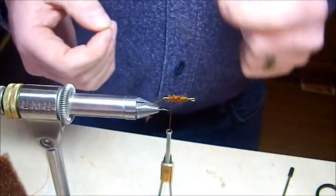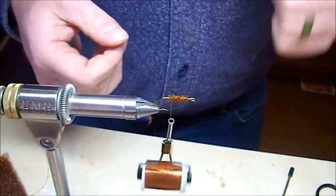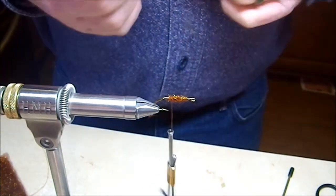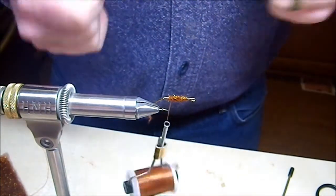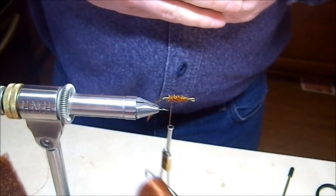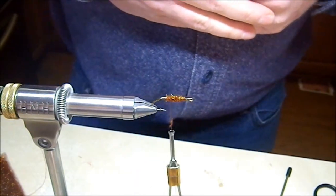But use as little dubbing as you can get by with each time, and you'll find out that you've got great control over that dubbing. Your bodies are going to look good. They're going to be exactly the taper, exactly the diameter you want them to be, and your dubbing problems will very likely go away. Thank you.